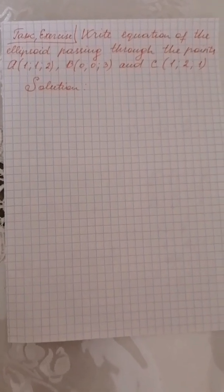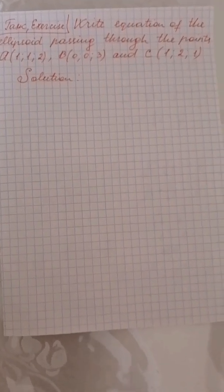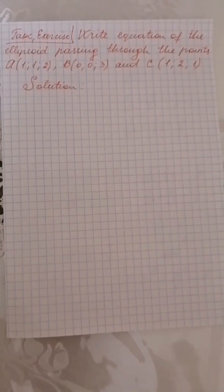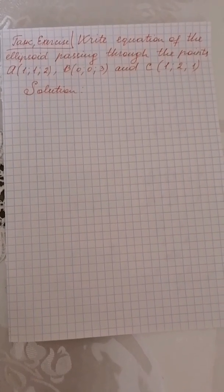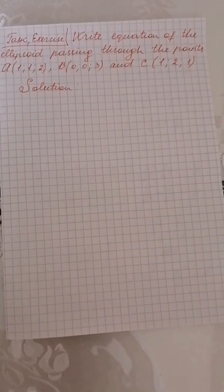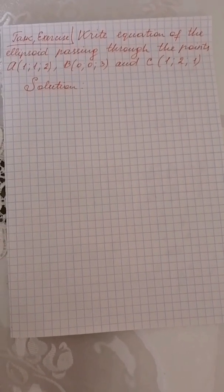Hello everyone, welcome to my YouTube channel. Today I will explain a task exercise: write the equation of the ellipsoid passing through the points A, B, and C. The coordinates of point A are (1, 1, 2), the coordinates of point B are (0, 0, 3), and the coordinates of point C are (1, 2, 1).